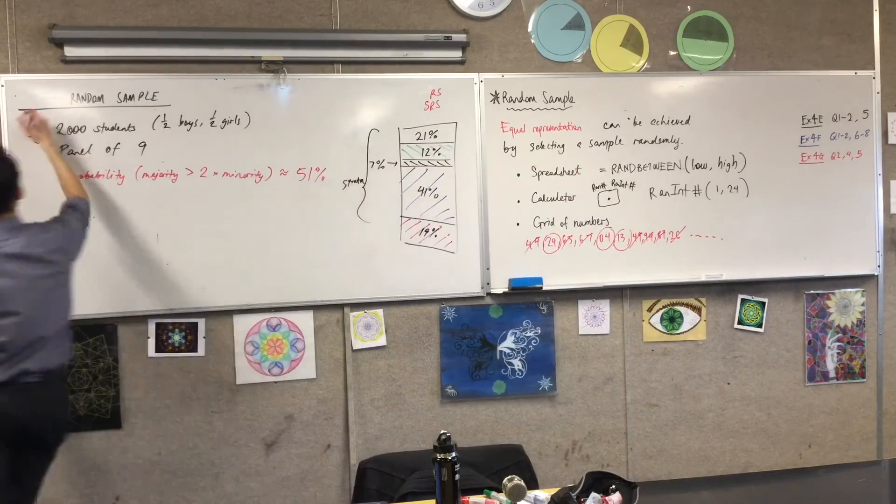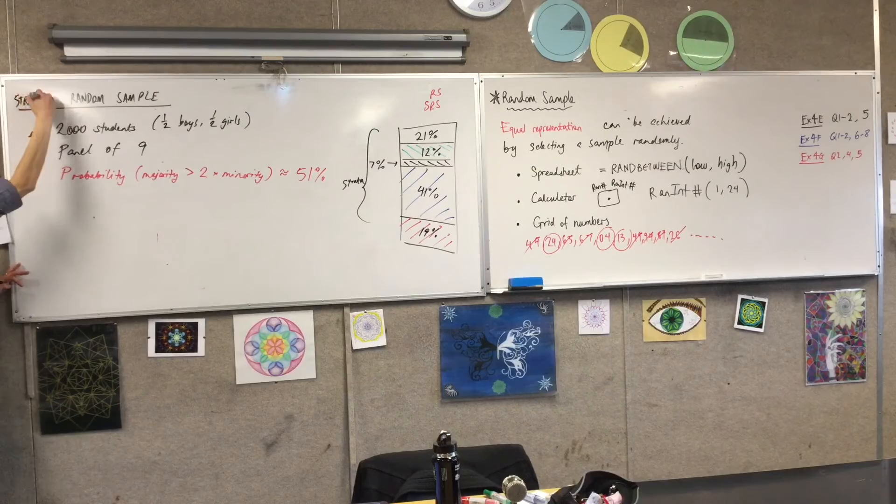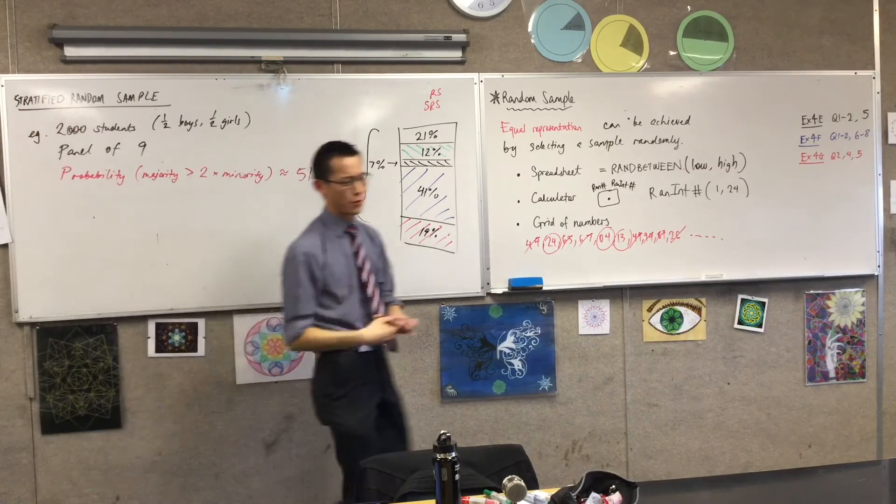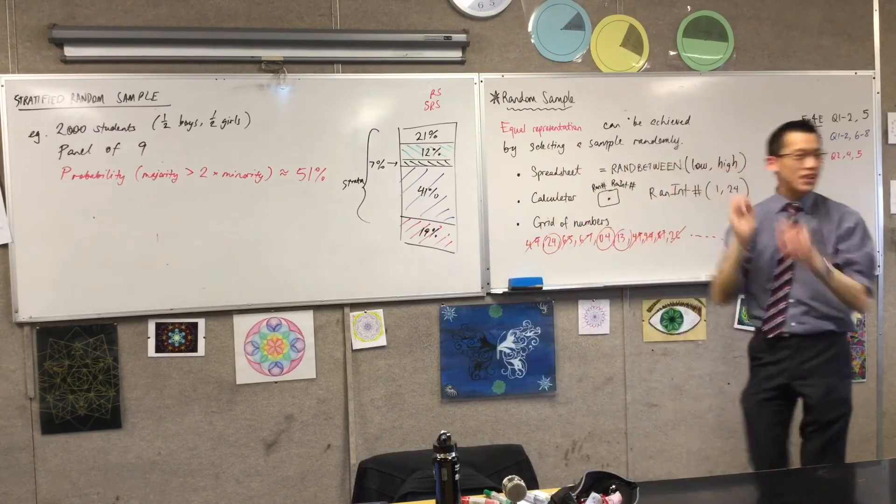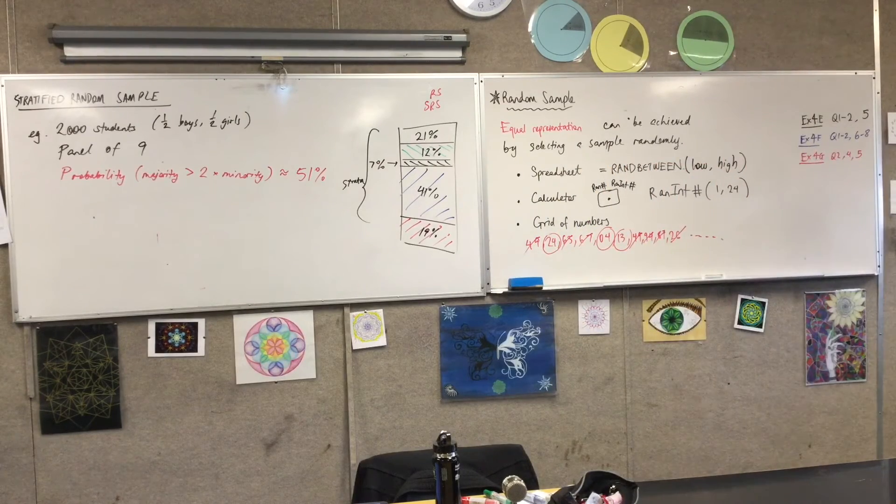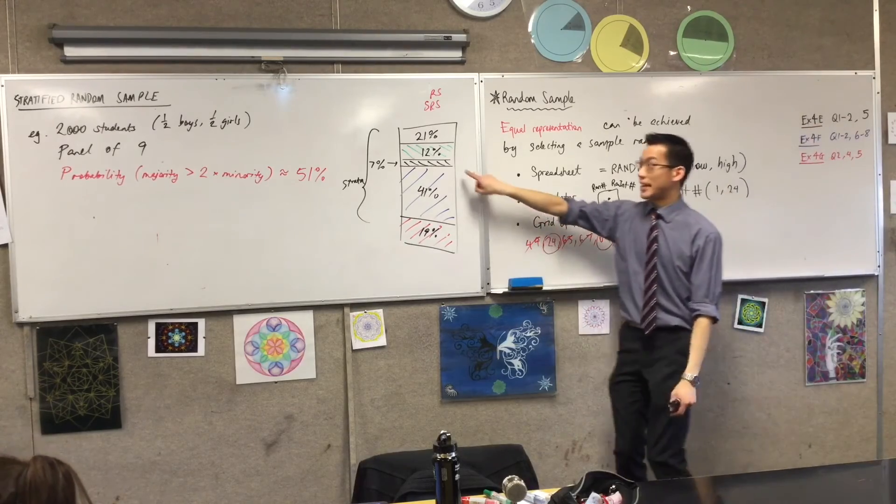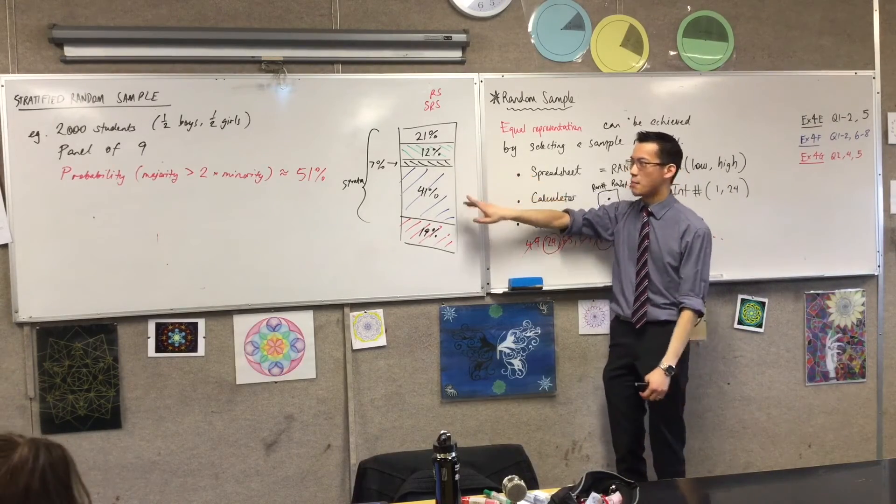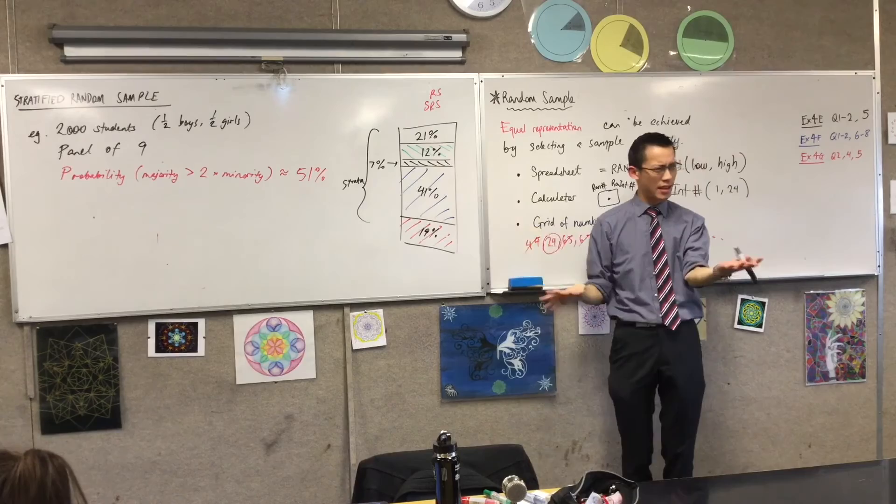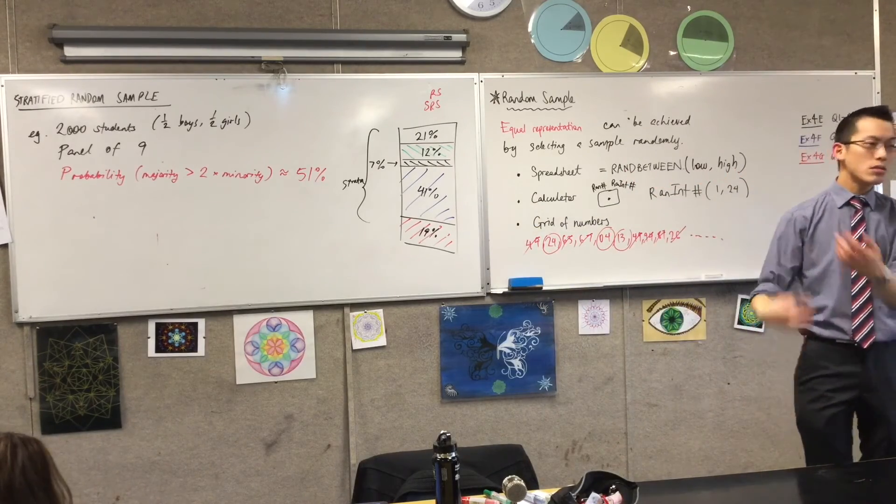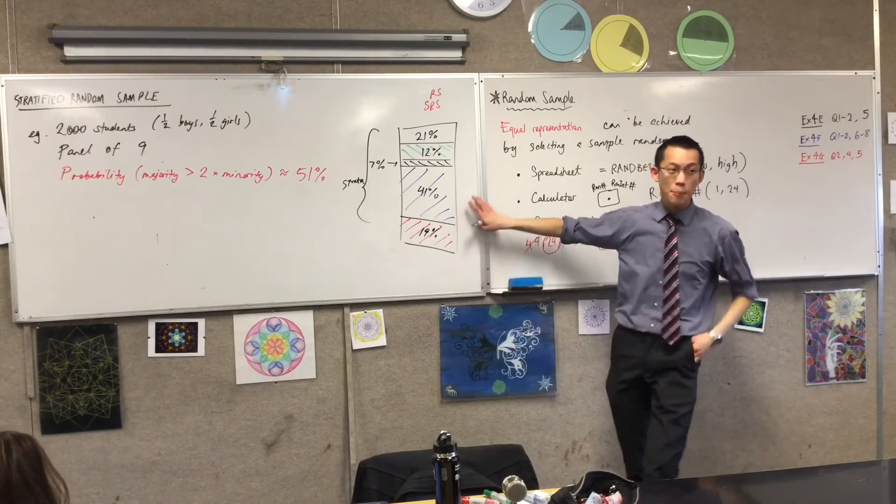So because what we're doing is we're taking proportions from each of the strata to try and get this equal representation, we call this a stratified random sample. Fancy word. It just means it's layered and I want to make sure I get some of each of the layers. I want to get less of the small layers and more of the big layers. Does that make sense?